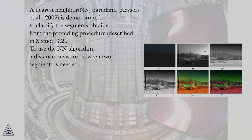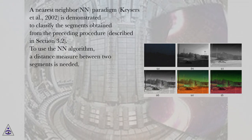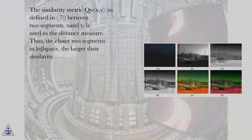A nearest neighbor paradigm (Kiesers et al., 2002) is demonstrated to classify the segments obtained from the preceding segmentation procedure described in section 3.2. To use the k-NN algorithm, a distance measure between two segments is needed. The similarity metric q(x, y) as defined in equation 7, between two segments x and y, is used as the distance measure. Thus, the closer two segments are in L-alpha-beta space, the larger their similarity.